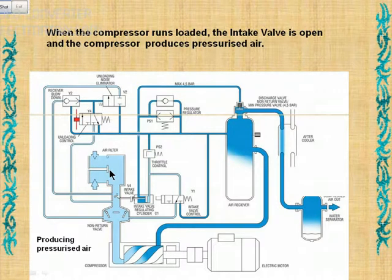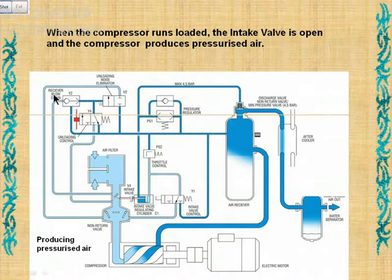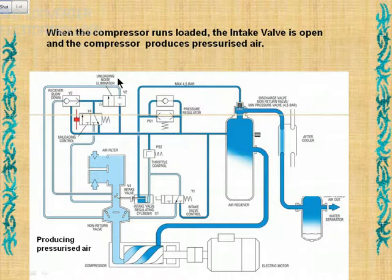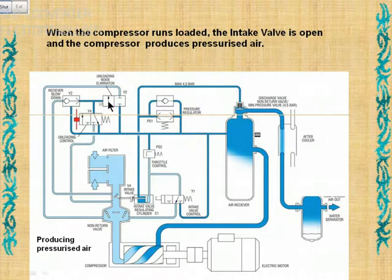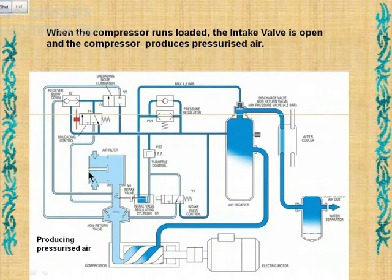This is the air filter side. Once you stop the compressor, the pressure has to be released. To release the pressure, we have the blow-down — the receiver blow-down and the unloading noise eliminator. This is the noise eliminator. The air that remains when you stop the compressor causes the air receiver to empty, so the air moves here and comes out through the filter on the return side.